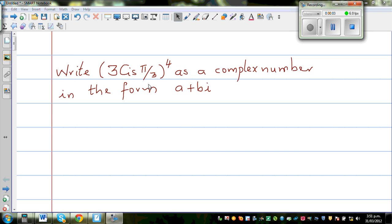Write 3 cis π/3 to the power of 4 as a complex number in the form a plus bi.